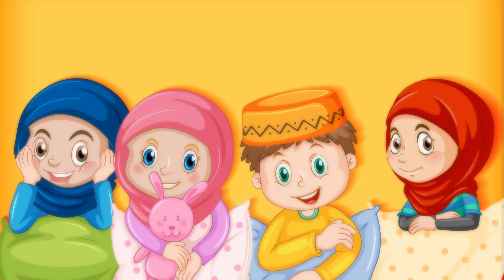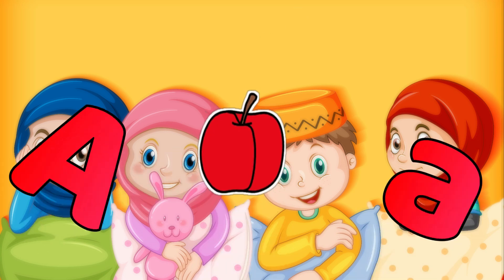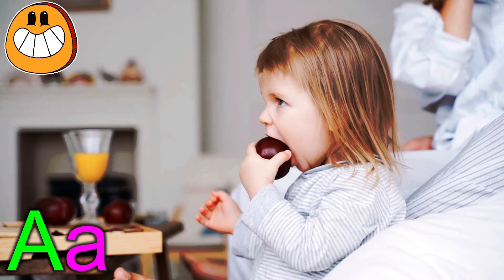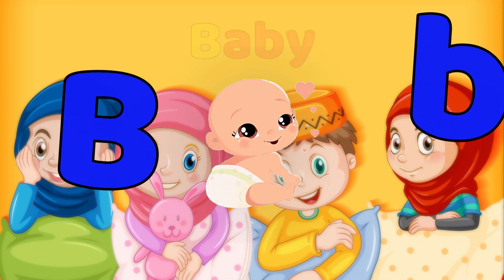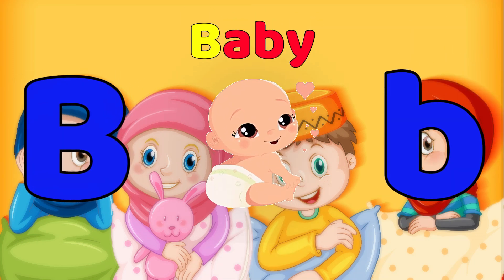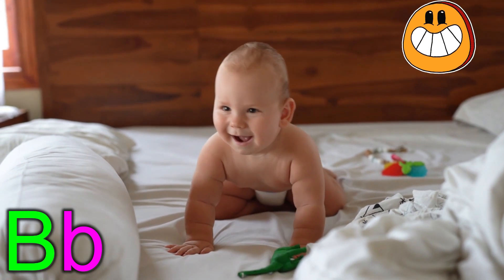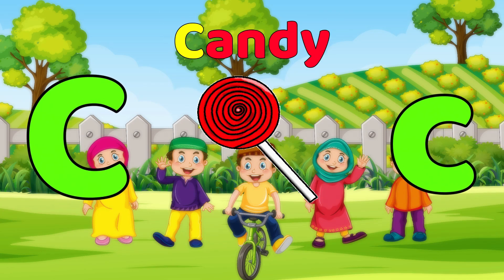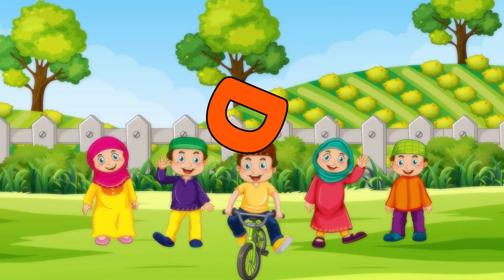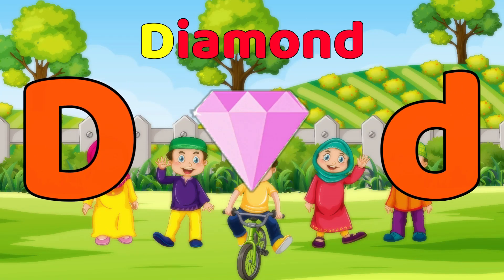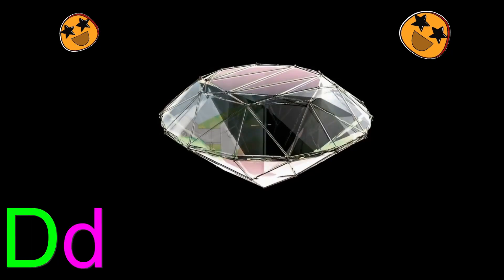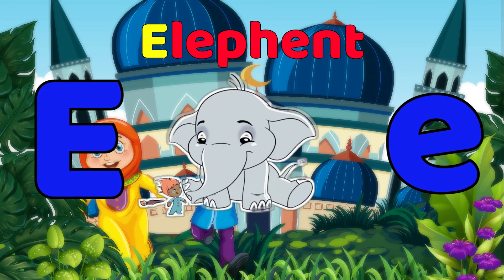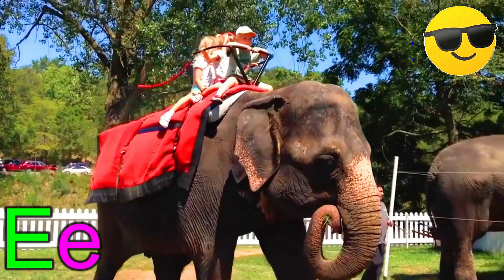Apple. A-a-apple, A-a-apple. B is for Baby. B-b-baby, B-b-baby. C is for Candy. C-c-candy, C-c-candy. D is for Diamond. D-d-diamond, D-d-diamond. E is for Elephant. E-e-elephant, E-e-elephant. Elephant.